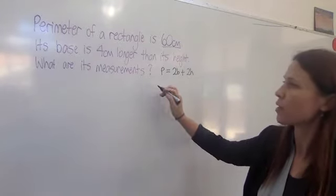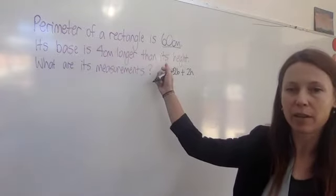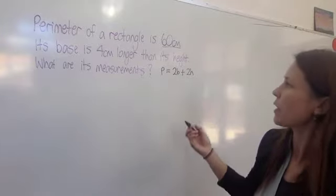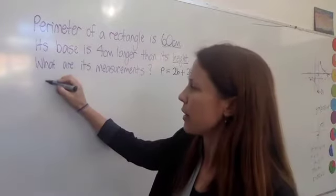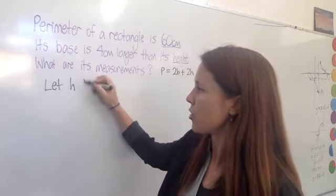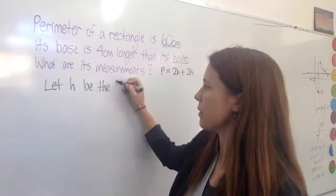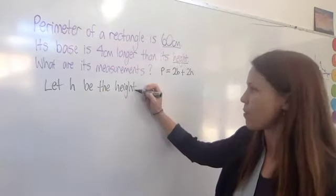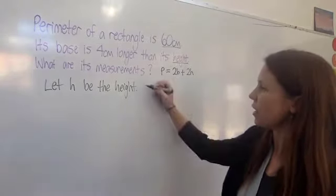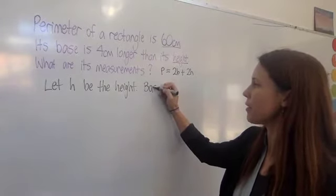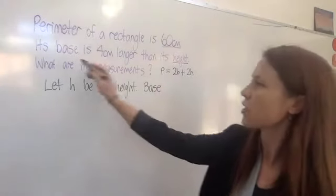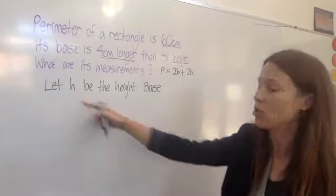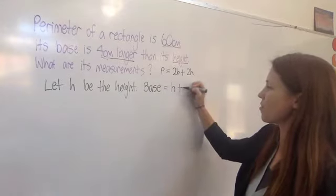I'm going to come up with an expression for one of these, either the base or the height, and then an expression for the other that's based on that. I think the easiest way to go here is to choose h, and let's say, let h be the height. I could have chosen x, of course, but h is nice and easy, because I can remember then that h is the height. Now, if h is the height, what will the base be? Well, read the question again. The base is four centimeters longer than the height. So, whatever the height was, h, the base will be h plus four.